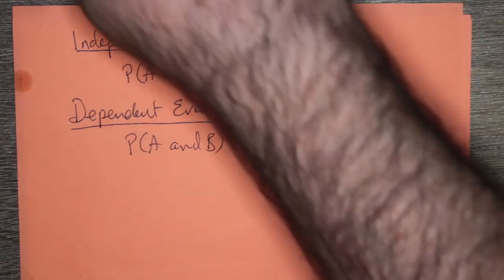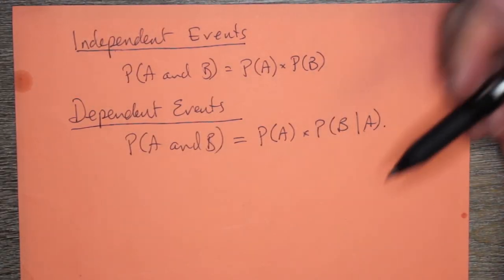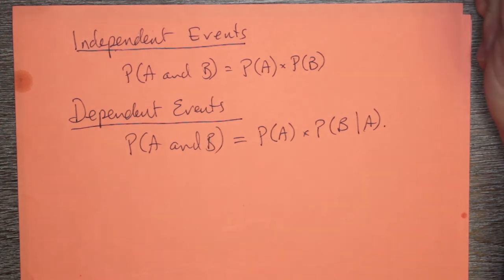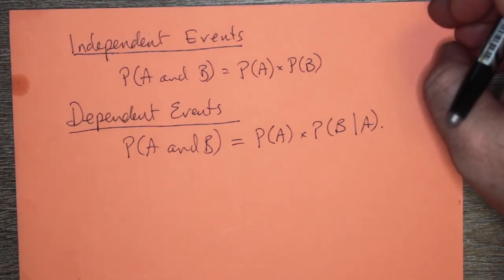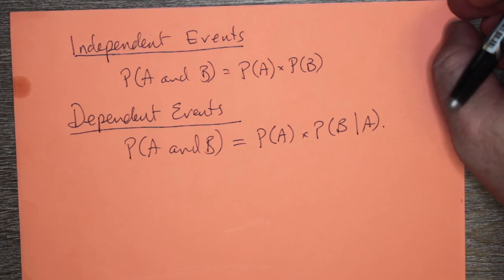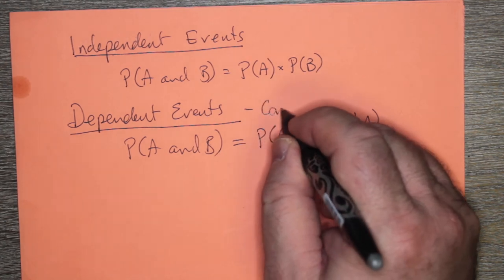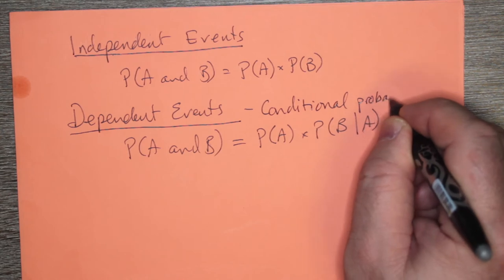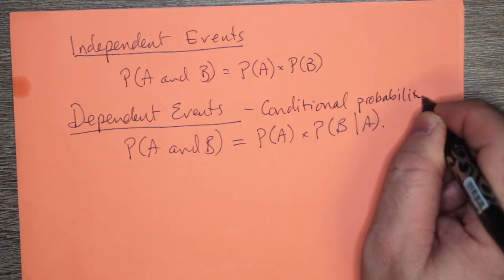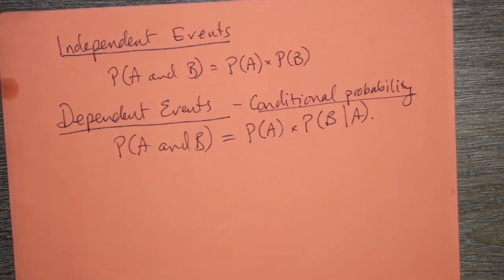Dependent events, though, it's where you basically have two events that are connected. That basically the fact that one of those events happens has an influence on the other event happening. That's kind of what we're talking about. So when they're dependent, we talk about conditional probability.